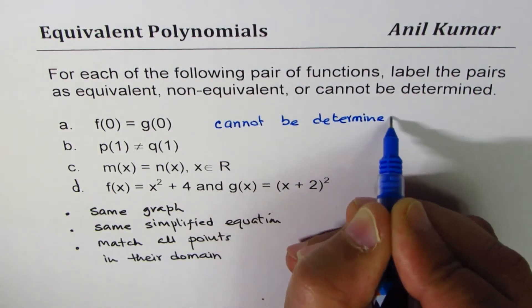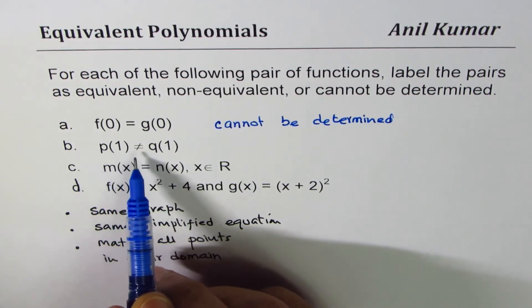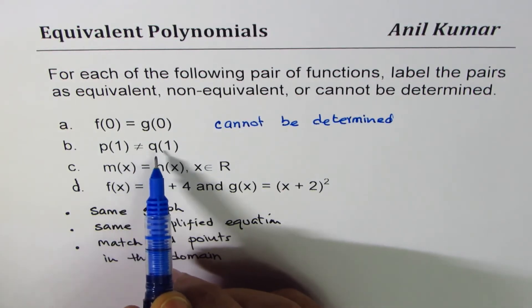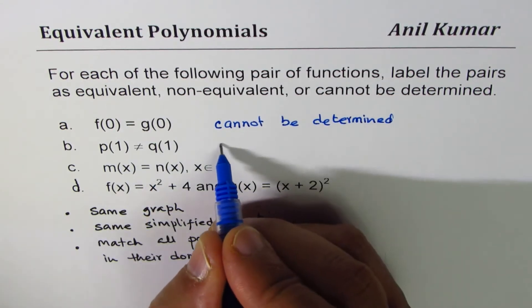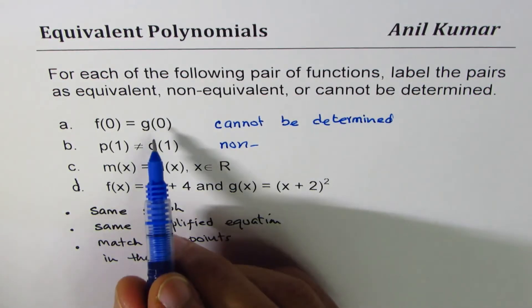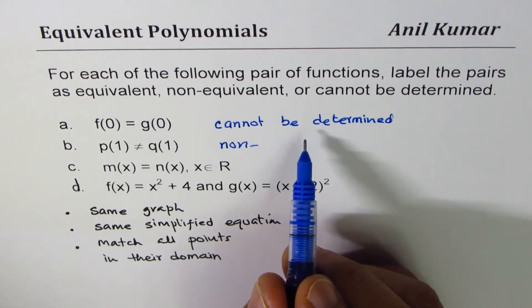The second one here is in the function p, p(1) is not equal to q(1). Since there is at least one point we know of which is not same, we know they are non-equivalent. So that is what I meant by saying match all points. If one or two points are matched, we don't know about others. We cannot say for sure whether they are equivalent or not.